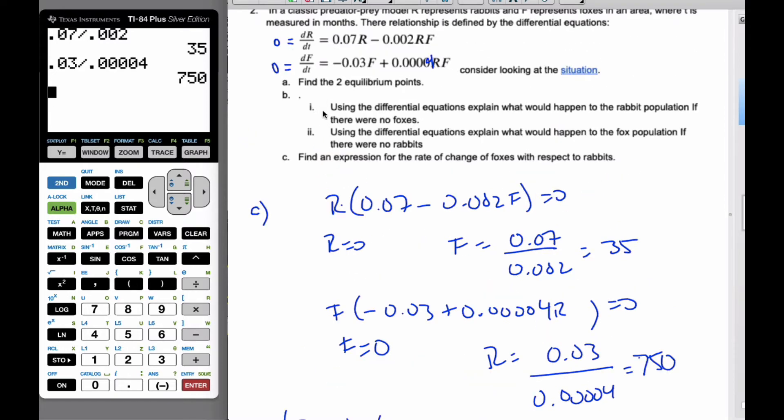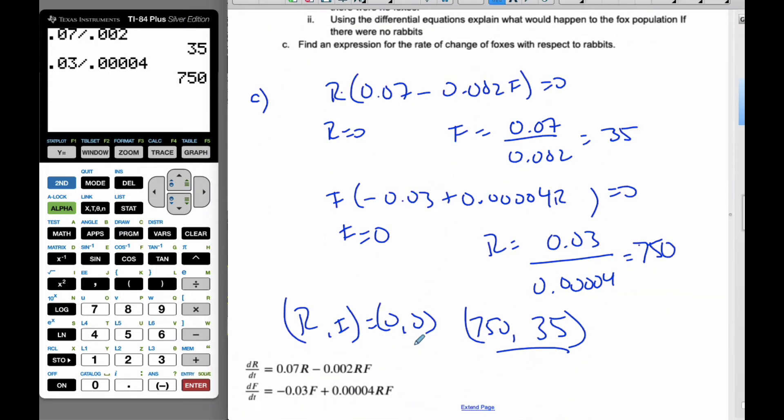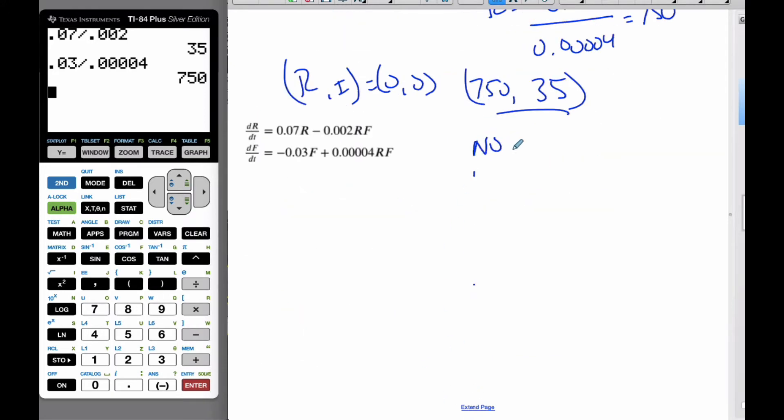So part B says, if there were no foxes, what would happen to the rabbit population? If there were no rabbits, what would happen to the fox population? So if I consider my differential equations here, if there are no rabbits, that's zero r and zero r here, so this is zero. df/dt, the rate of change of foxes, will be negative 0.03, this is no rabbits. If I have no foxes, that means this one will be zero, and dr/dt will be just 0.07r. And this is 0.03f.